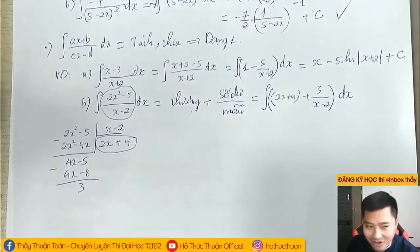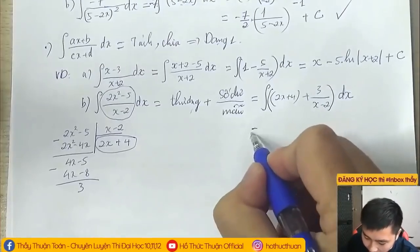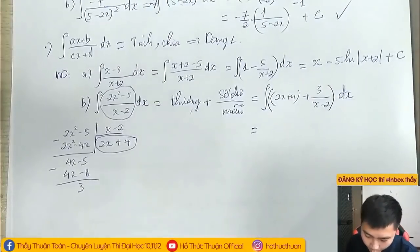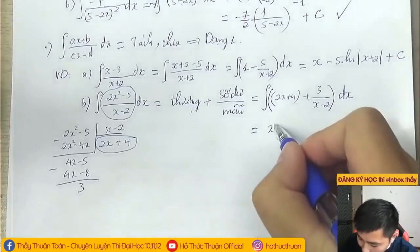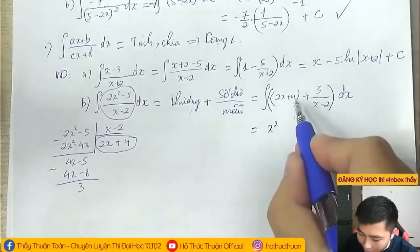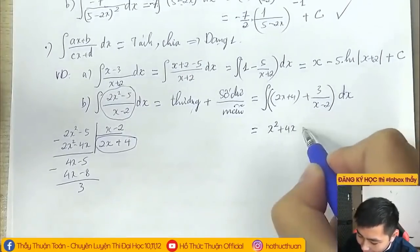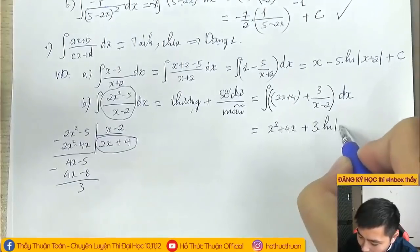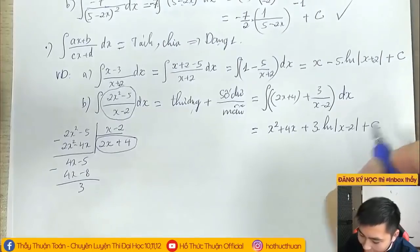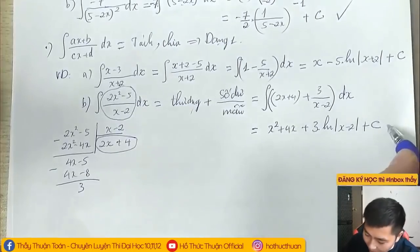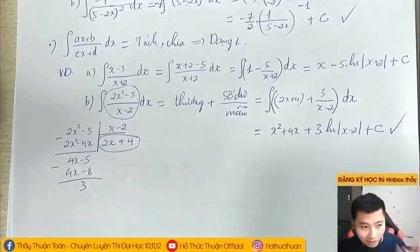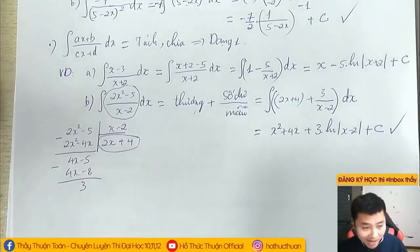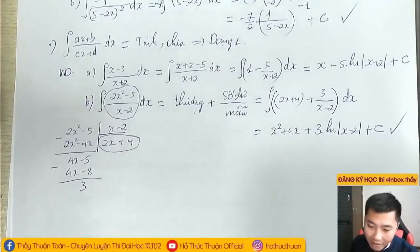Sau khi biến đổi xong thì tính nguyên hàm của từng cái một: nguyên hàm của 2x bằng x², nguyên hàm của 4 bằng 4x, nguyên hàm của 3/(x-2) bằng 3 ln|x-2|. Kết quả luôn luôn cộng với C. Đó là 3 dạng cơ bản của nguyên hàm hữu tỷ dạng phân thức.